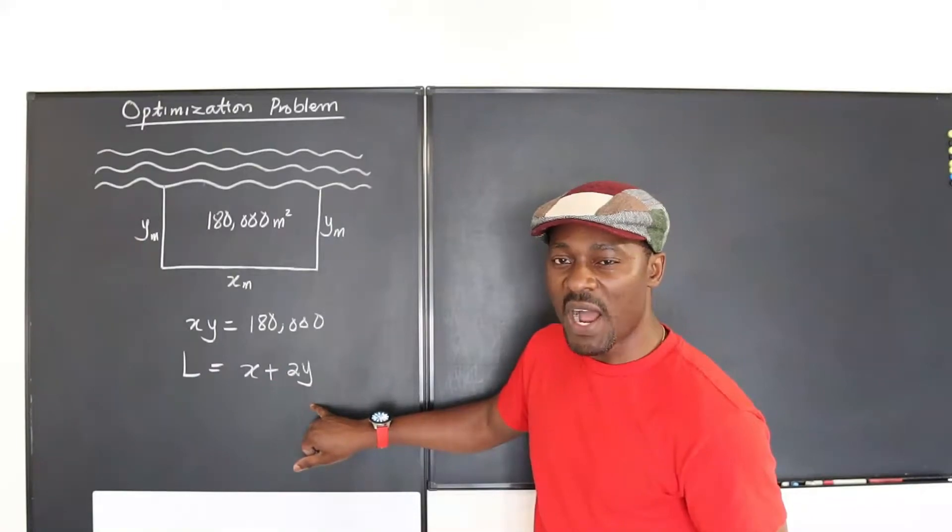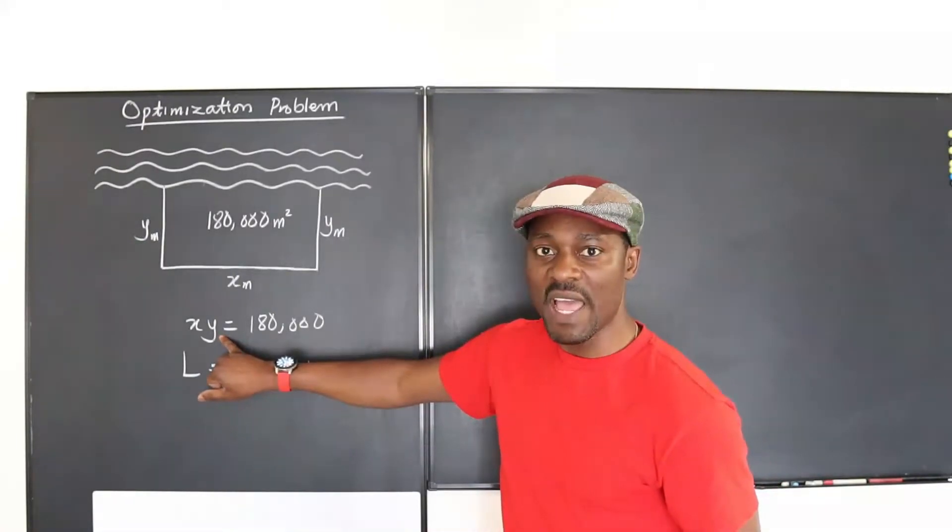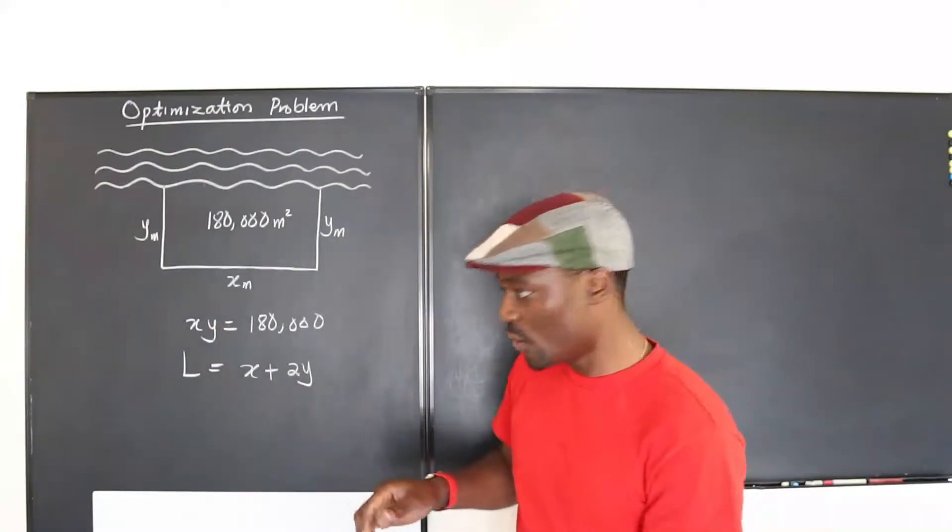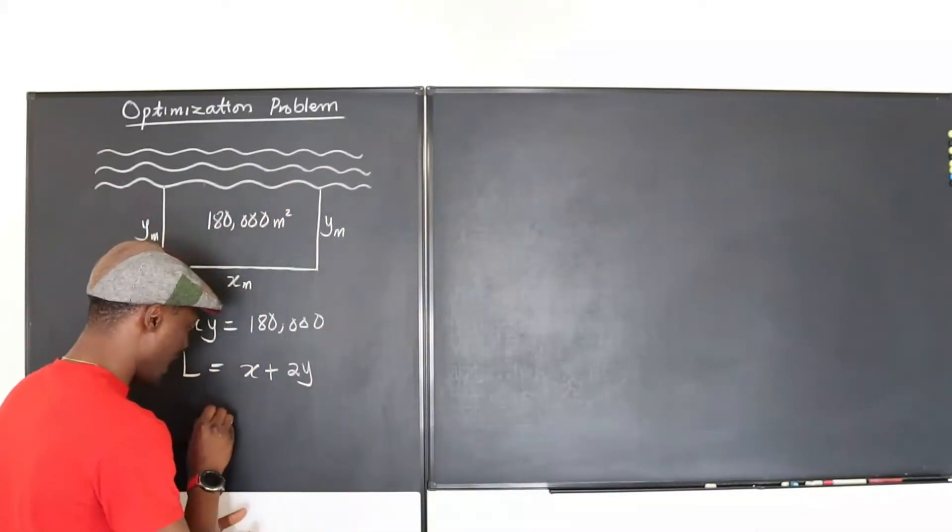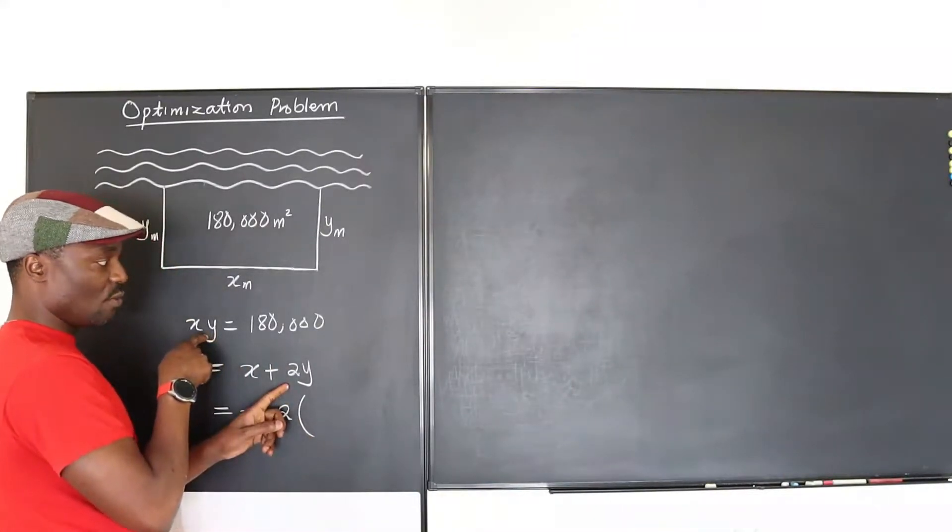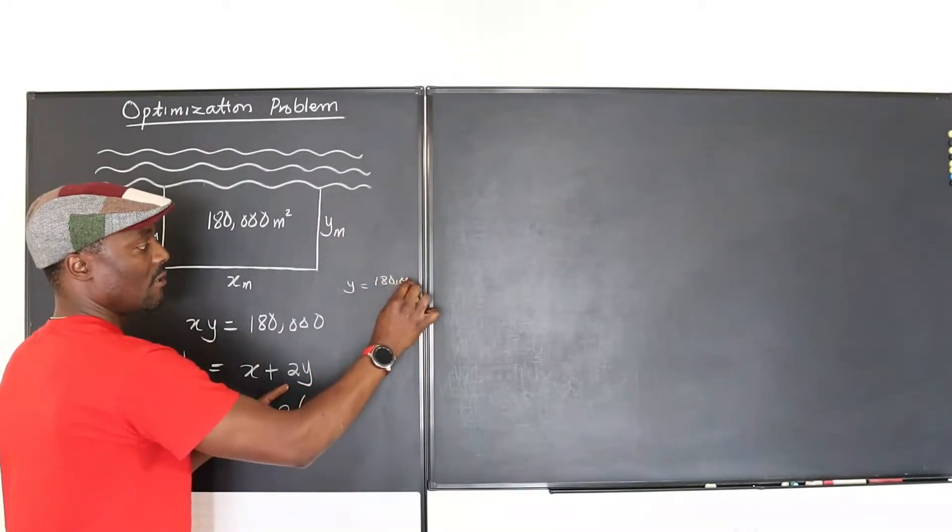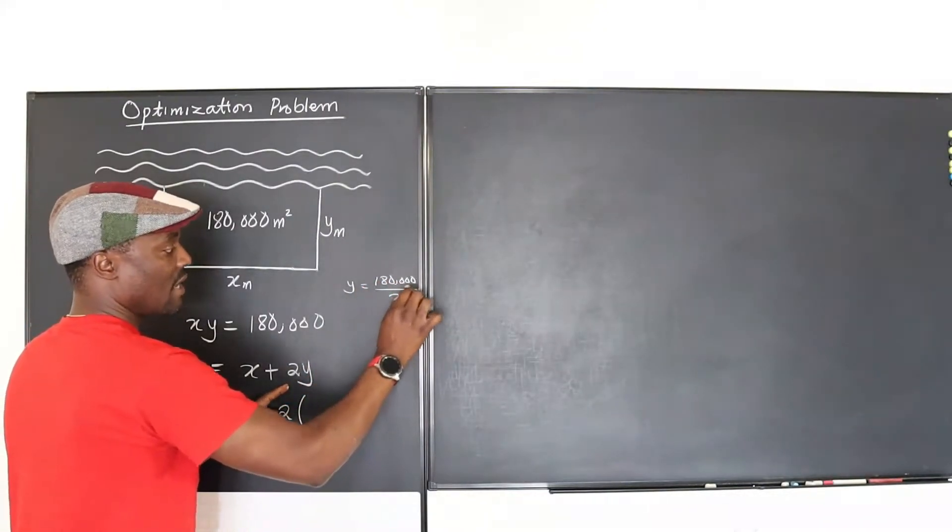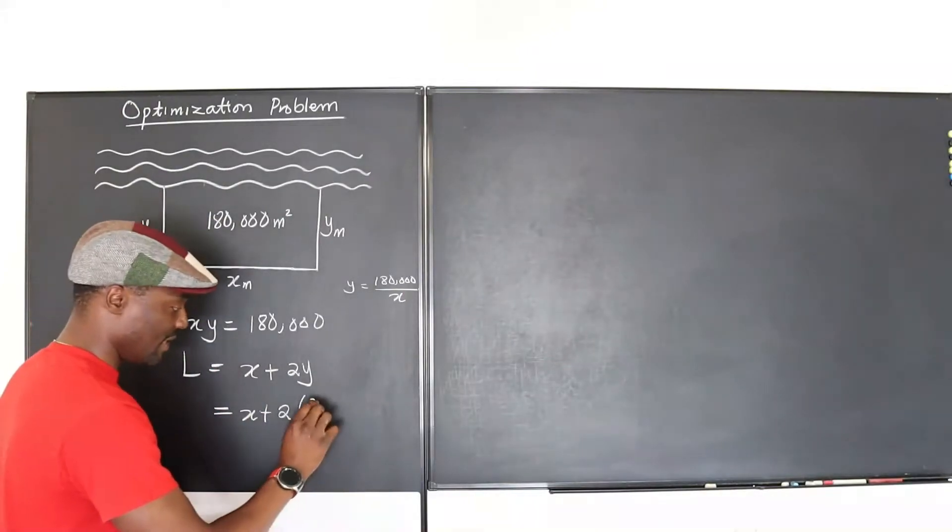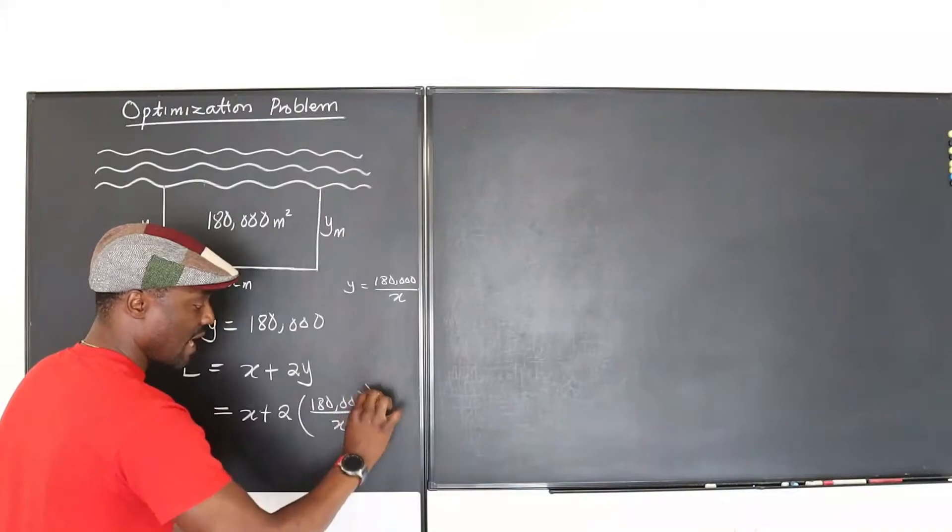How can I replace y? Well, we've got one equation here, so I can write y in terms of x. So we can write L to be x plus 2 times y. But what is y? From this equation, you know that y is 180,000 divided by x. So I'm going to replace y here and say 180,000 divided by x.